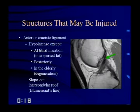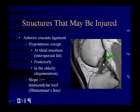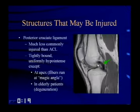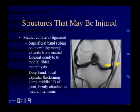Moving on to patterns of injury: a brief anatomy review. The anterior cruciate ligament should be hypointense, except at the tibial insertion where there can be a little interspersed fat. Posteriorly it can be slightly less hypointense, and in the elderly there can be degeneration. The slope should be equal to or greater than the intercondylar roof — the Blumensaat line. The PCL is much less commonly injured than the ACL; its fibers are more tightly bound and therefore more uniformly hypointense, except at the apex where magic angle phenomenon can cause slightly increased signal.